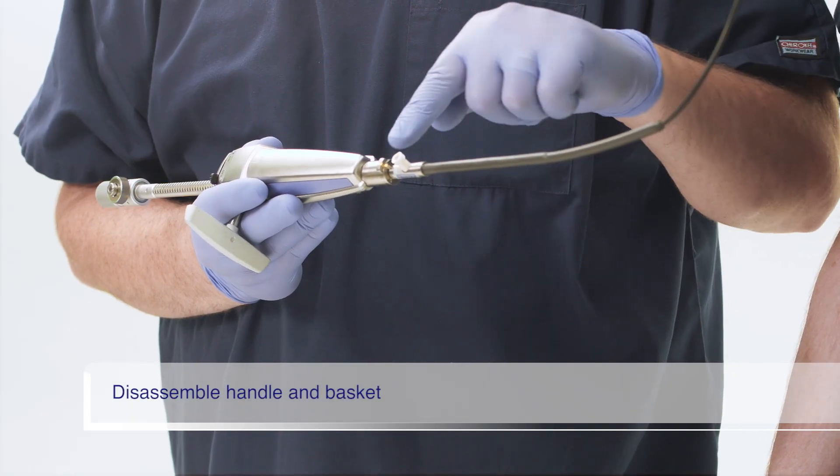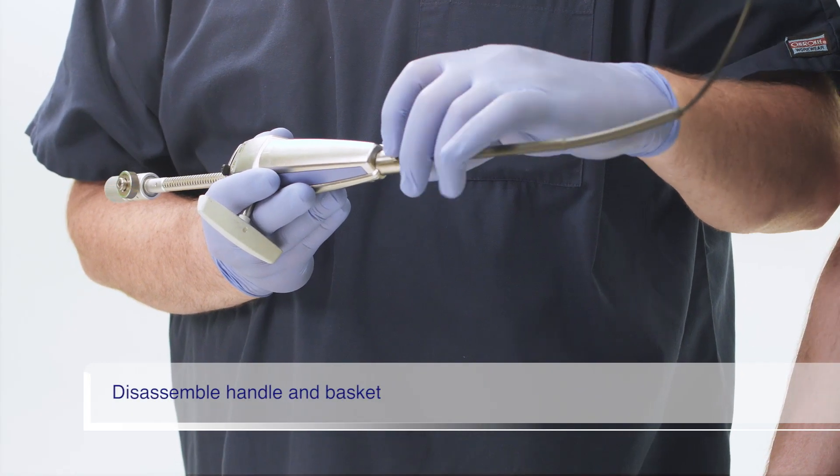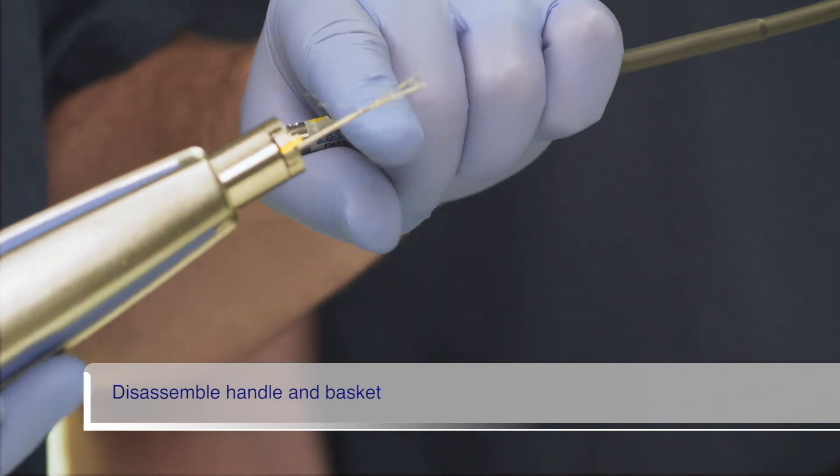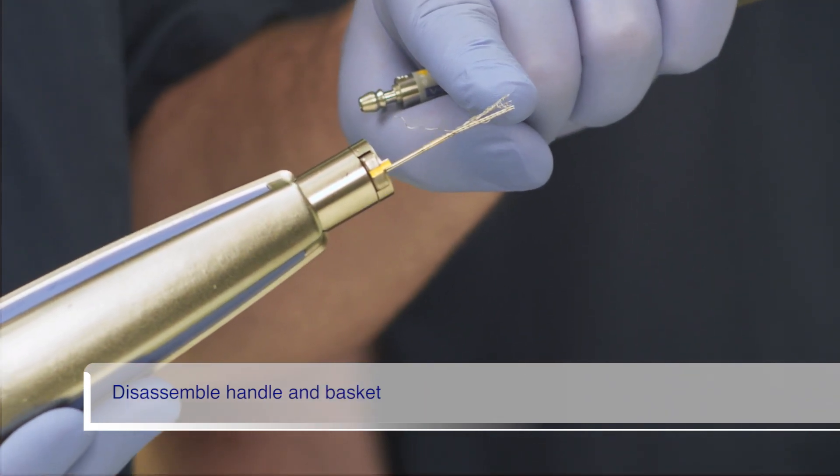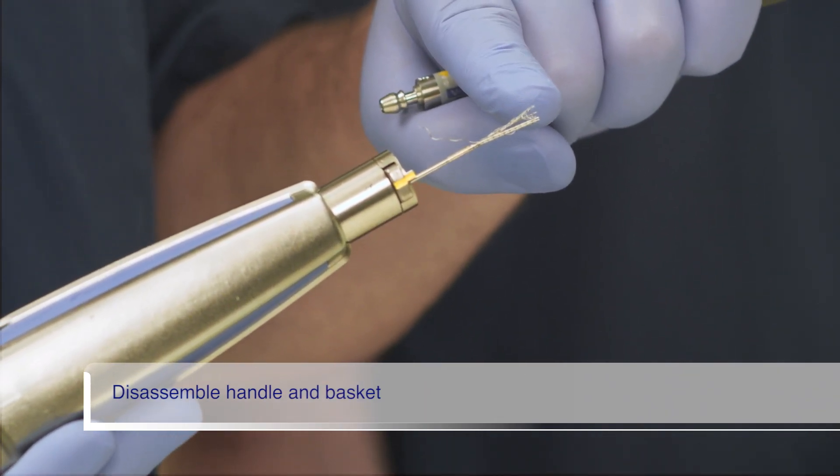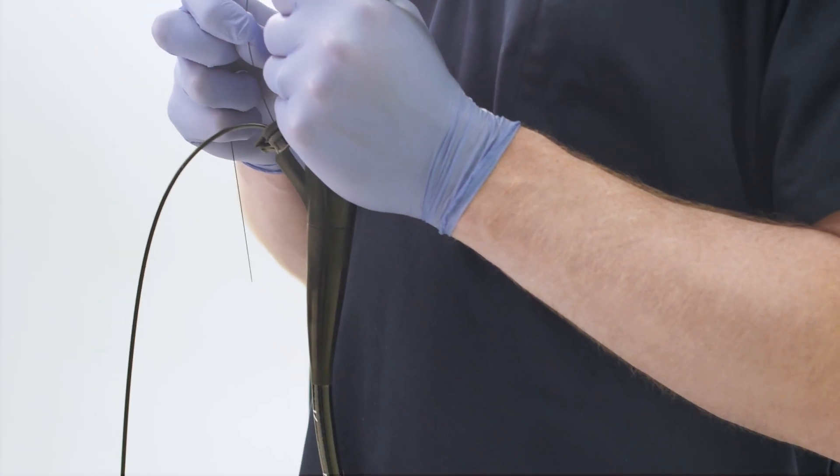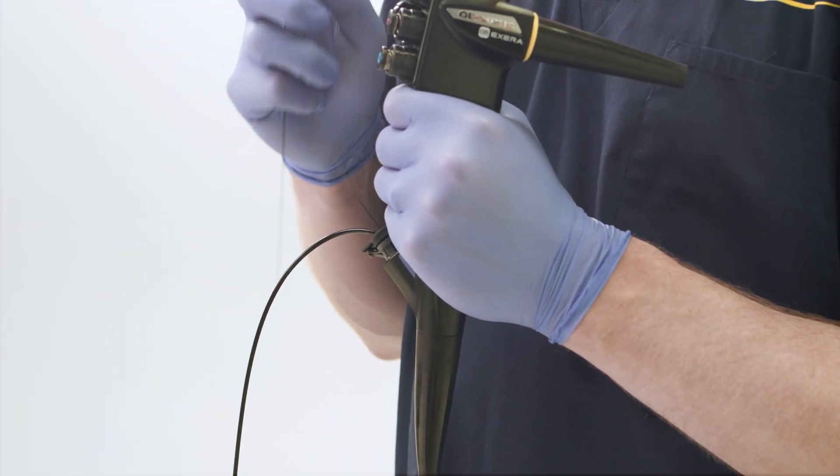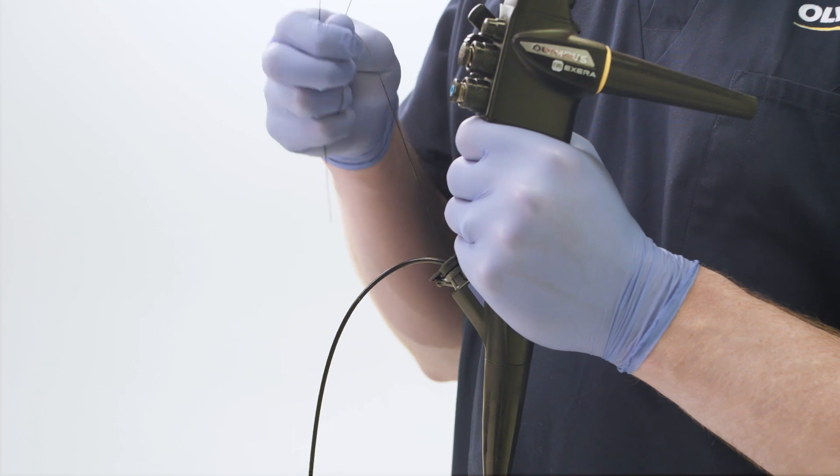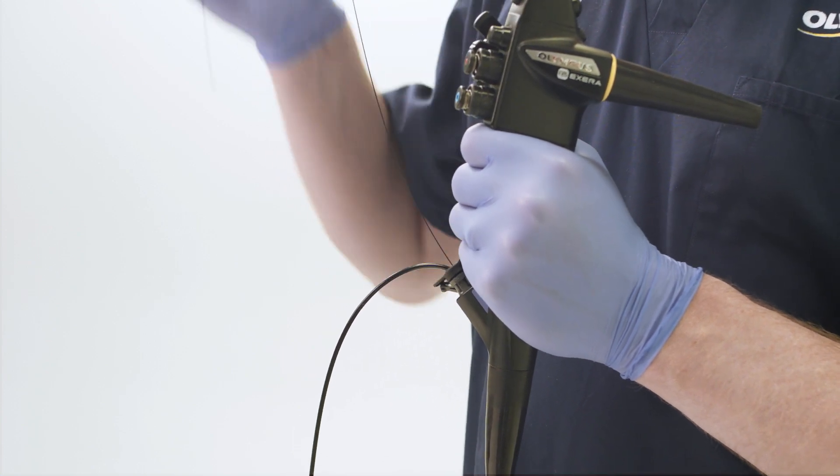First, we will disassemble the handle by pressing on the yellow button as shown. Notice that you can see the broken stem protruding from the end of the handle. If the distally wire-guided version of Lithocrush V is being used, remove the guide wire from the patient.